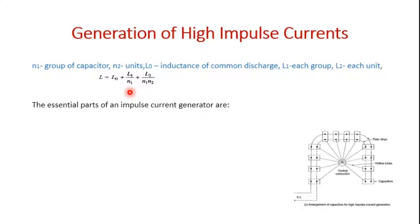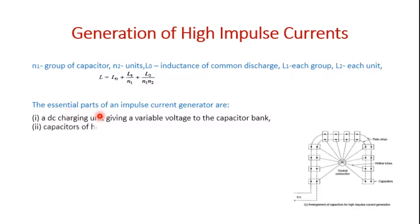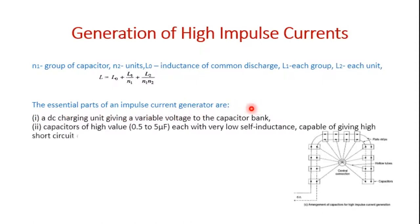The essential parts required for the impulse generator are: first, a DC charging unit giving a variable voltage to the capacitor bank, which is the input required for charging the capacitors. The capacitors, generally of 0.525 microfarad each with a low inductance value, should be capable of giving high short circuit current.